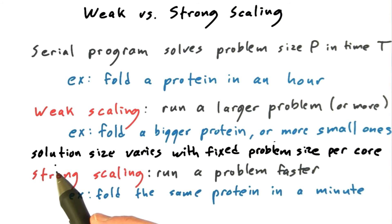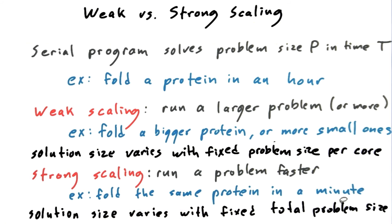More formally, we could say that weak scaling describes how the solution size varies with a fixed problem size per processor as you add processors. We would say that strong scaling describes how the solution size varies as you add processors to tackle a fixed total problem size.